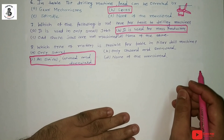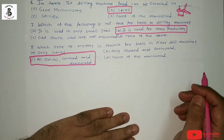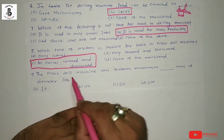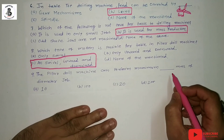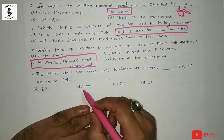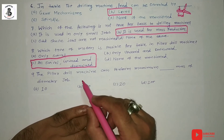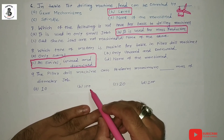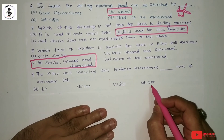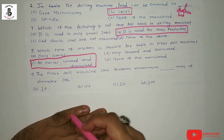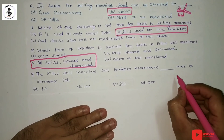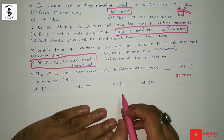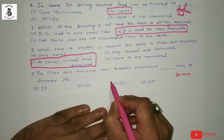You will find a link in my description for the construction and working of pillar drill machines. Next question: the pillar drill machine can perform a maximum of how many mm diameter job? Option A: 10 mm, option B: 100 mm, option C: 20 mm, option D: 200 mm. The working capability of pillar drilling machines is only up to 20 mm. So the right answer is option C — 20 mm.